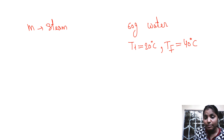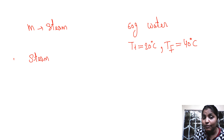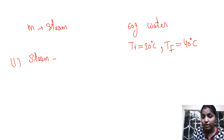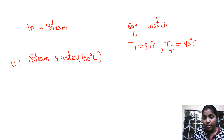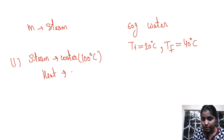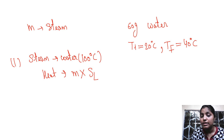Now when you mix the steam into water, the first step is the steam will convert into water — the steam loses its energy or heat and converts into water at 100 degrees centigrade, because the state is changing, so the temperature remains constant. The heat released in this process will be equal to mass of the steam into latent heat of steam, which is 2250 m joules.